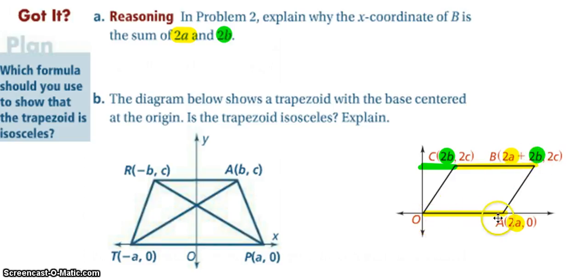Because the base of the parallelogram is a length of 2A and this C point up here is 2B away from the axis, so we have to span this distance and the distance of the parallelogram to get to that x coordinate.